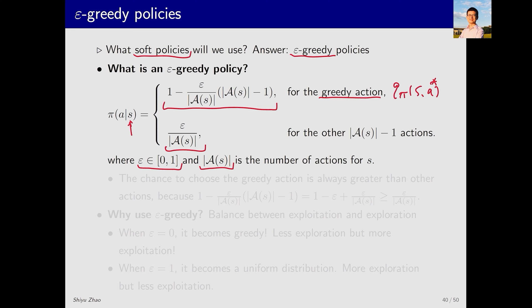Let's consider the grid world example, where each state has 5 actions. If we choose epsilon as 0.2, then epsilon over |A(s)| equals 0.04, meaning each of the 4 non-greedy actions has a probability of 0.04, leaving the probability of the greedy action as 0.84, which is 1 minus 0.16. This demonstrates that while the greedy action has the highest probability of selection, other actions have smaller yet non-zero probabilities.